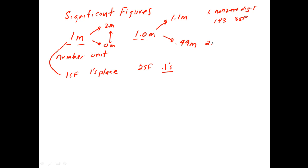Rule number two, this is the hardest rule. There's actually three parts to this rule, and they all deal with zeros. If a zero is trapped between two non-zero digits, it is significant. So there's three significant figures here.